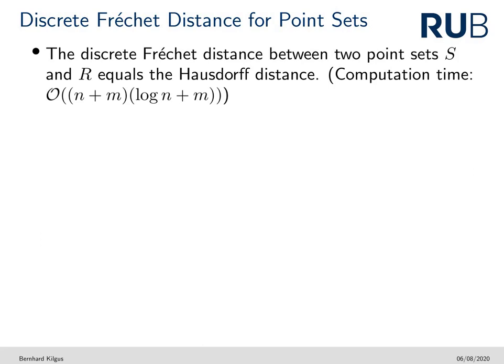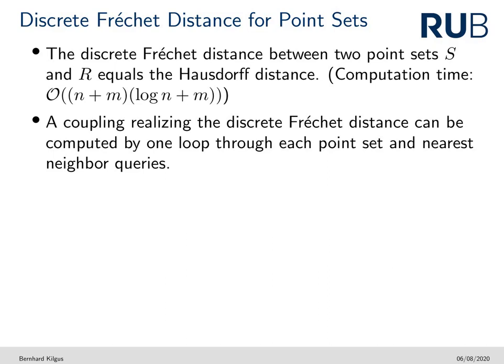The discrete version turns out to be quite an easy problem to solve. We first observe that the distance equals the Hausdorff distance between the point sets, which can be computed in O((n + m) log(n + m)) time using Voronoi diagrams. Furthermore, a specific minimum length coupling and thus two specific curves that realize the distance can be computed by looping through the point sets and answering nearest neighbor queries.